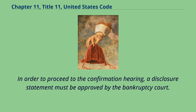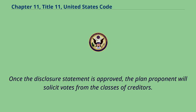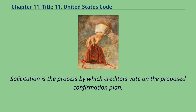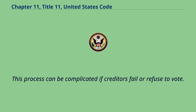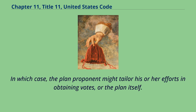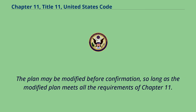In order to proceed to the confirmation hearing, a disclosure statement must be approved by the bankruptcy court. Once the disclosure statement is approved, the plan proponent will solicit votes from the classes of creditors. Solicitation is the process by which creditors vote on the proposed confirmation plan. This process can be complicated if creditors fail or refuse to vote, in which case the plan proponent might tailor efforts in obtaining votes, or modify the plan itself. The plan may be modified before confirmation, so long as the modified plan meets all the requirements of Chapter 11.